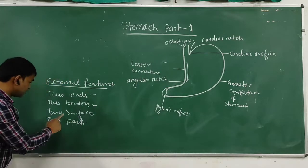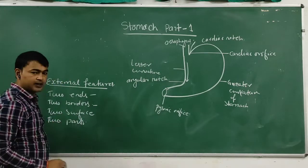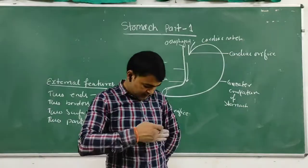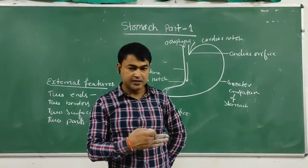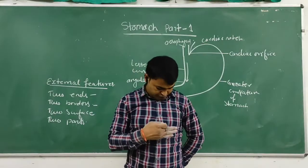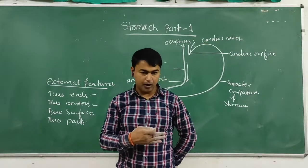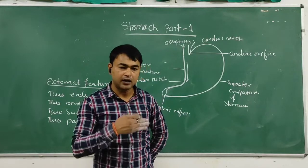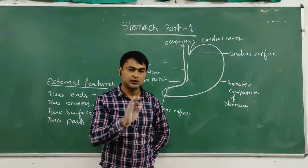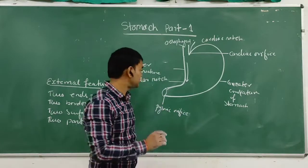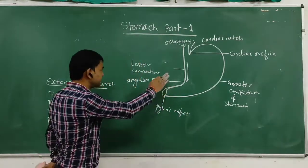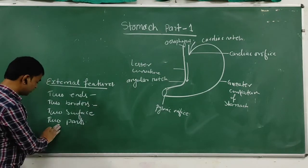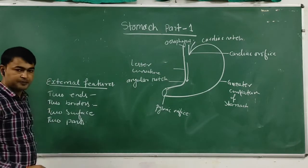The stomach has two surfaces: the anterior surface, which faces forward and upward, and the posterior surface, which faces backward and downward.